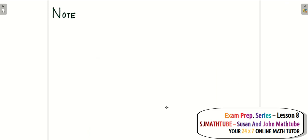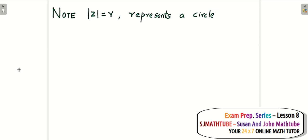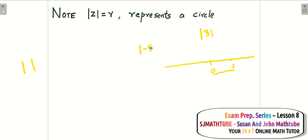Note: this is something very important because we will use it in many places, especially when we prove Cauchy's integral theorem and formula. Look at this: |z| = r. First of all, modulus stands for distance from the origin — in 1, 2, 3, or any dimension. For example, the modulus of 3 means the distance of the point 3 from the origin, which is positive 3.